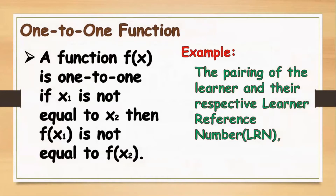So what is a one-to-one function? A function f(x) is one-to-one if x₁ is not equal to x₂, then f(x₁) is not equal to f(x₂). It only means that we can say a function is one-to-one if the domain values are not equal.